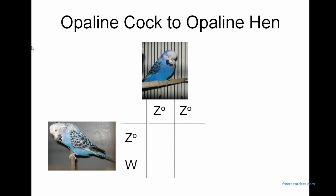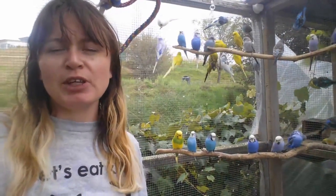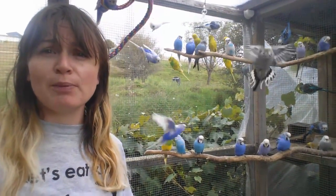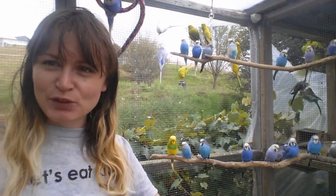Breeding an Opaline cock to an Opaline hen — the Opaline cock gives all babies the Opaline chromosome, and the hen gives all babies either the Opaline chromosome or the W. This makes 100% Opaline: Opaline cocks and Opaline hens. Hey guys, I hope this video is really helpful and I hope you can now identify the Opaline mutation in Budgerigars. Thanks for watching!